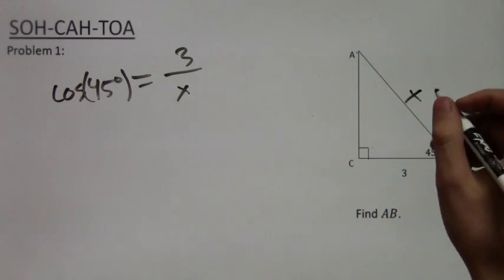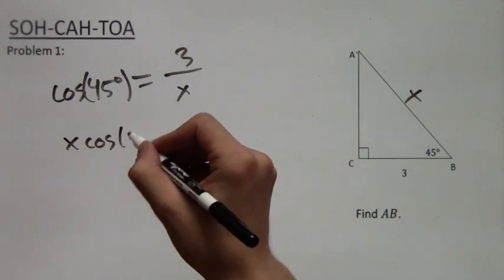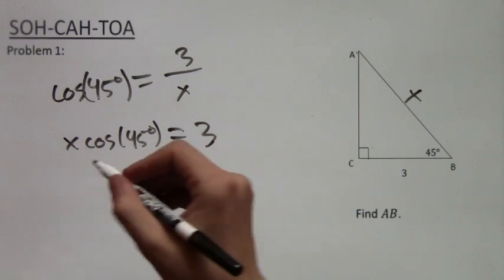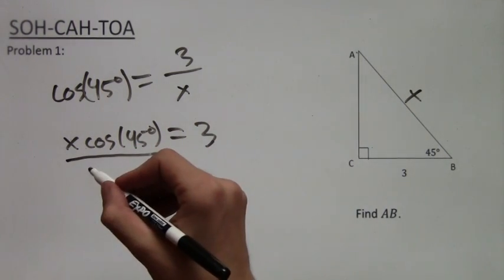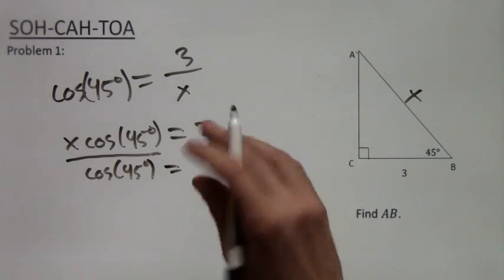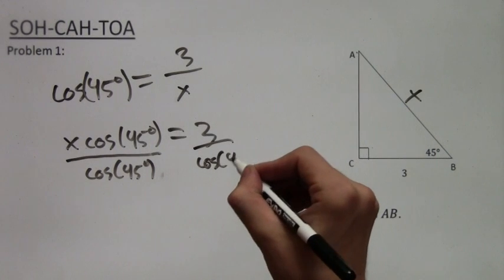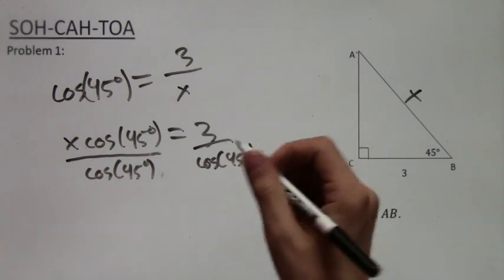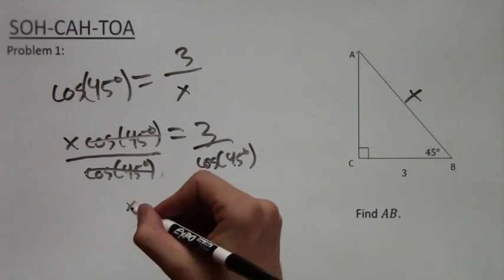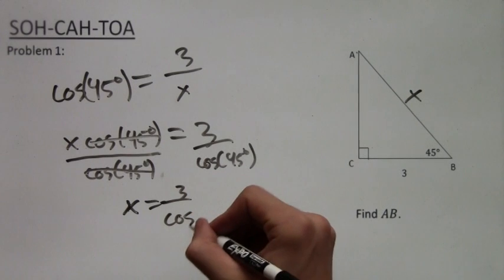So now we have this equation, and there's only one variable, X. So we have to solve for X. So this is the same as X cosine of 45 degrees equals 3, divided by cosine on both sides of 45 degrees. And we will get everything on the left side of the equation cancels out, except for the X of course.